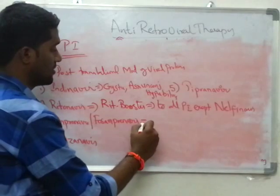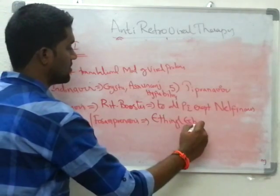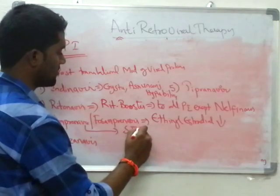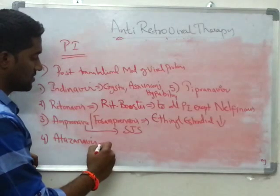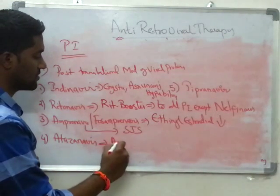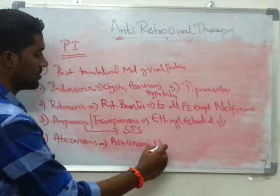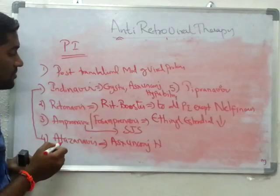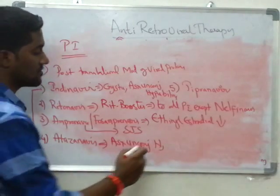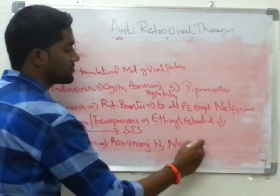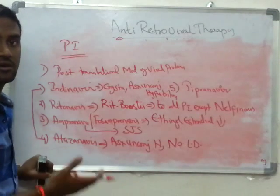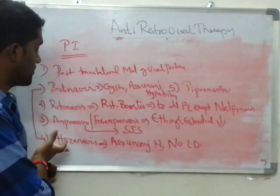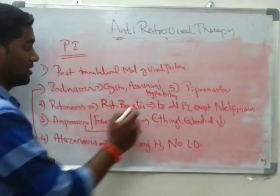Atazanavir — important to remember that it can also cause asymptomatic unconjugated hyperbilirubinemia. So both Indinavir and Atazanavir can cause asymptomatic unconjugated hyperbilirubinemia. One more important thing: no lipodystrophy is seen with Atazanavir. While lactic acidosis is a class-wide side effect of NRTIs, lipodystrophy is a class-wide side effect of protease inhibitors — except Atazanavir shows no lipodystrophy.